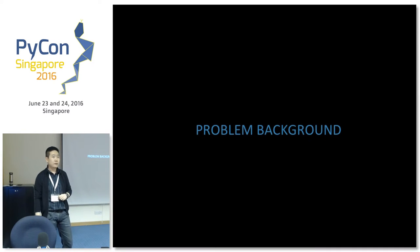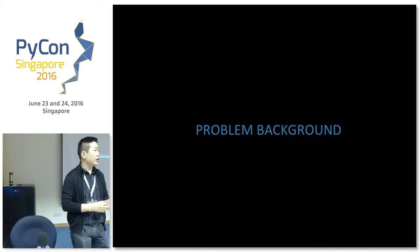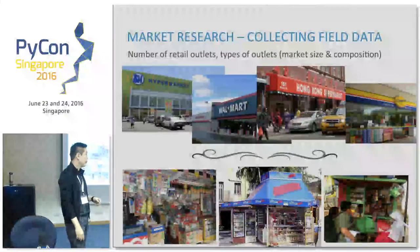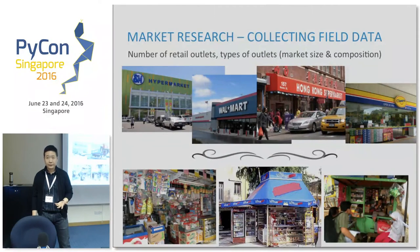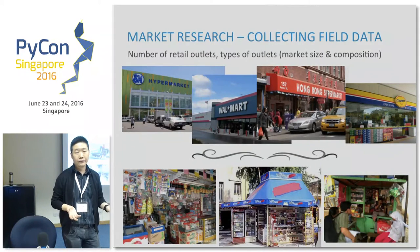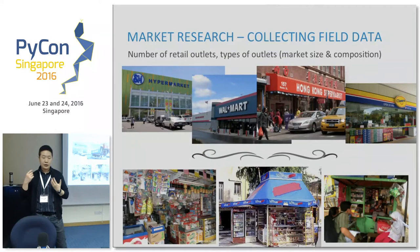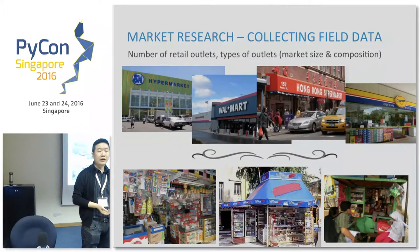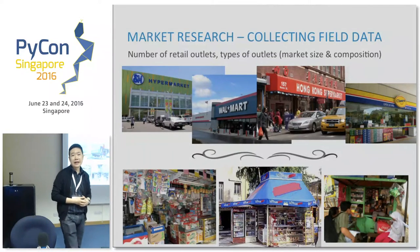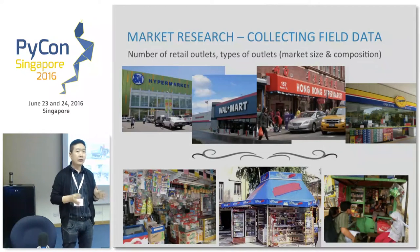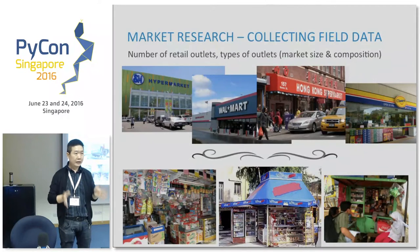The problem we are trying to solve is rural-urban classification. Nielsen is a market research company — we send our data collectors out to collect field information. One of the key services we offer to our clients — fast moving consumer goods manufacturers like Unilever, Nestlé, Coca-Cola, and Pepsi-Cola — is information about the size and composition of the retail market in the country they are operating in.